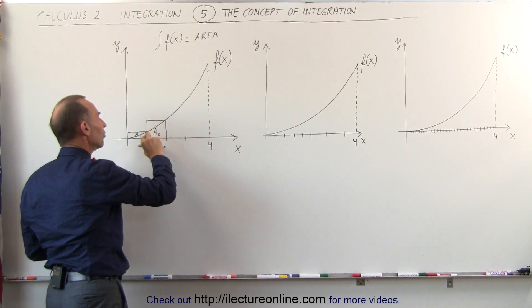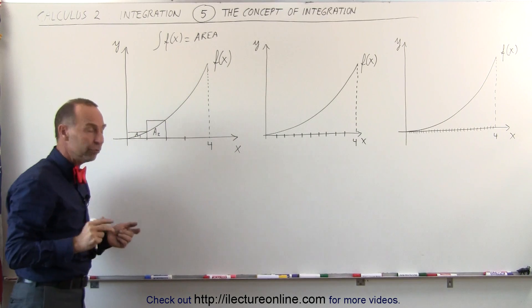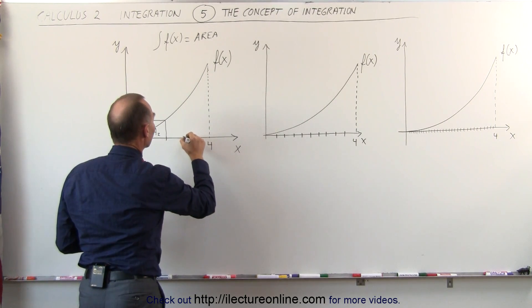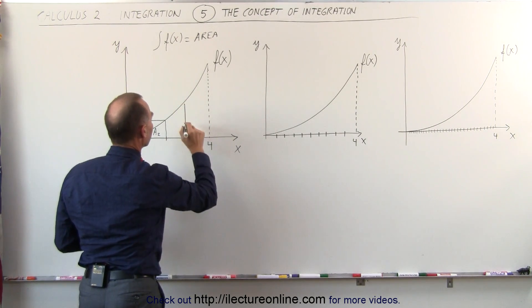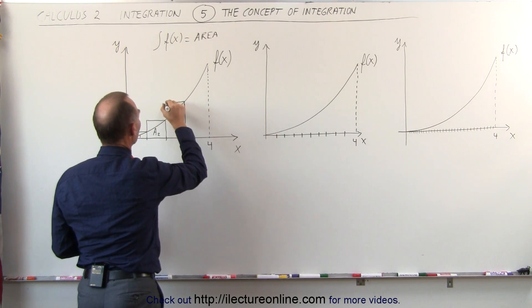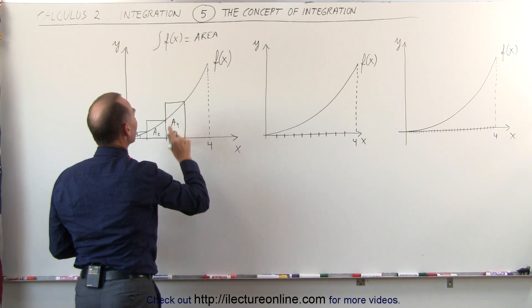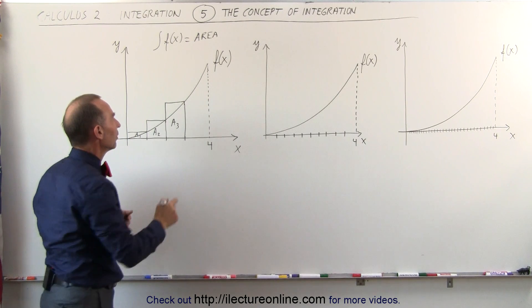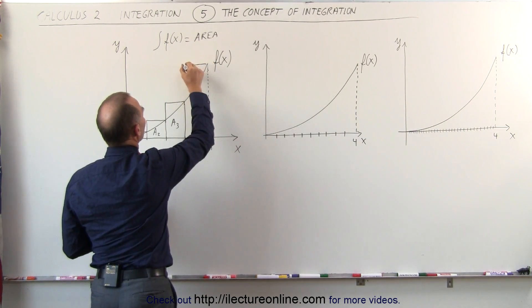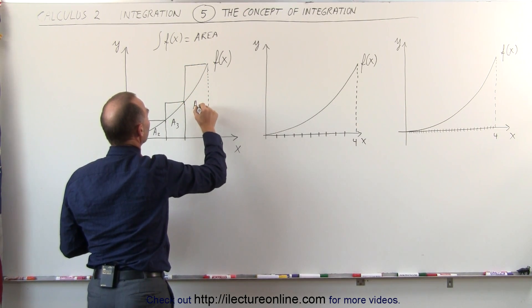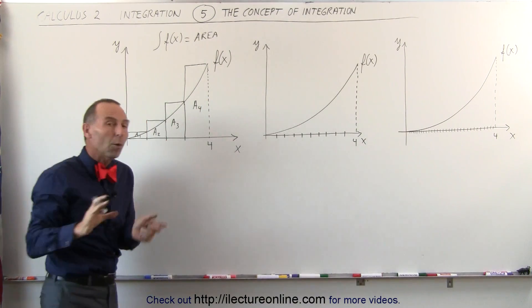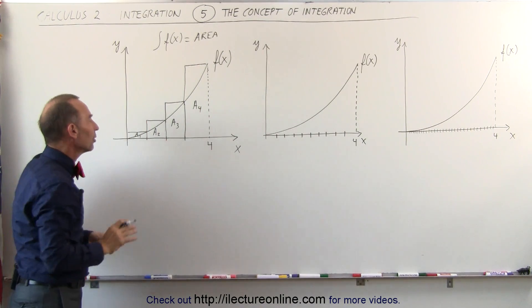This area of the rectangle is a little bit more than the area underneath the curve, and I can go ahead and do that again for this section. This is area 3, which is again approximately the area underneath the curve, and I can do area 4, which again I can say is approximately equal to the area underneath the curve. A little bit more, but we're close, we're in the ballpark.